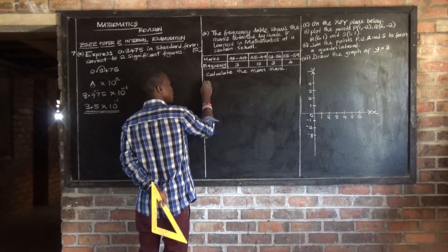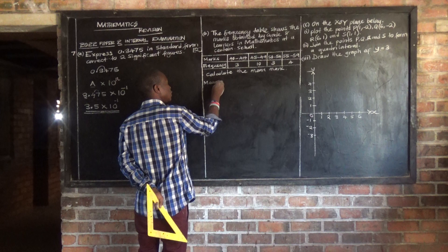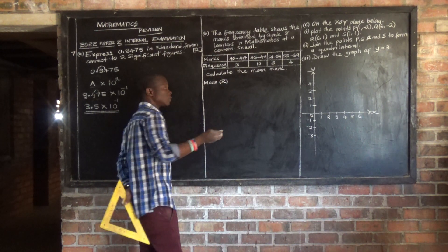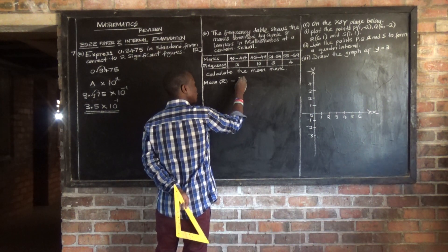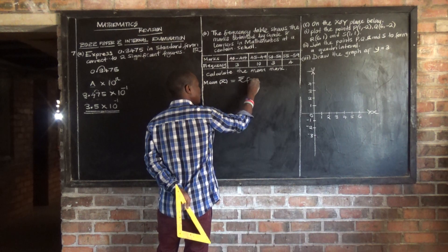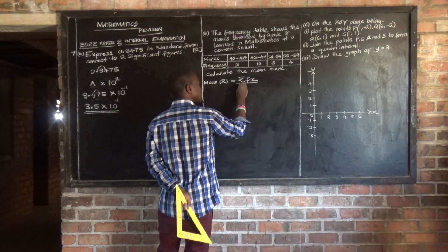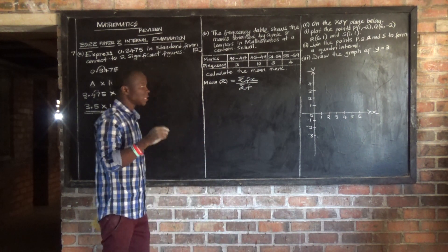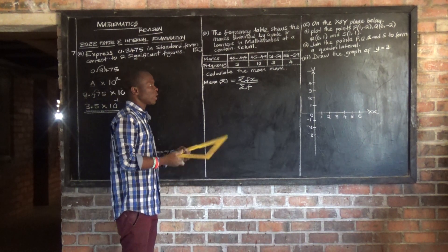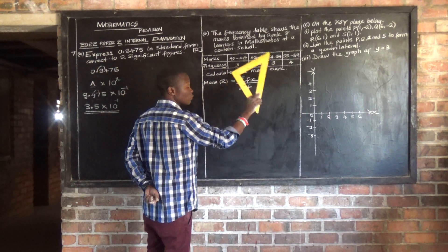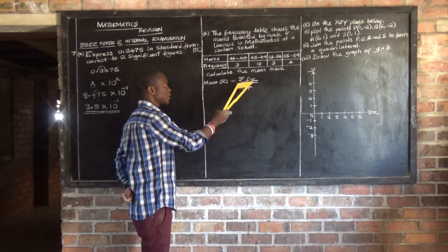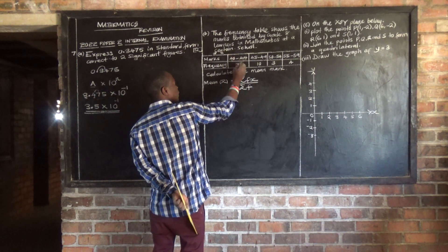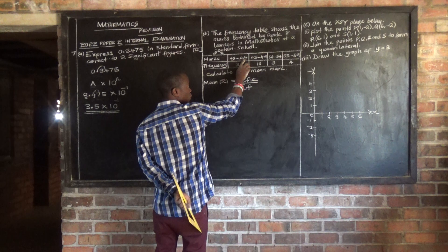So the mean has the formula. It's the mean which is X bar, is equal to summation of the frequency multiplied by the midpoint over the summation of the frequency. That's the formula we use. Now we have the frequency, but what we don't know is the midpoint which is X. So we need to find X on each range.